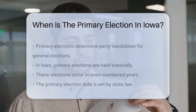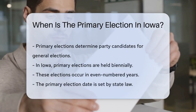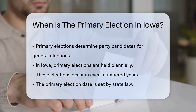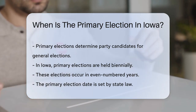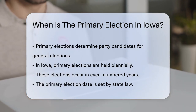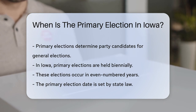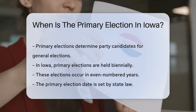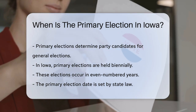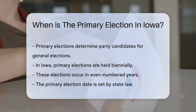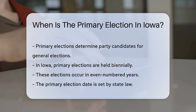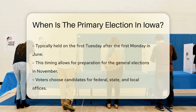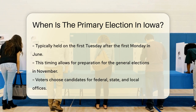Primary elections are crucial for determining party candidates for general elections. In Iowa, these elections are held biennially — they usually occur in even-numbered years. The primary election date is set by state law and is typically held on the first Tuesday after the first Monday in June. This timing allows for sufficient preparation for the general elections in November.